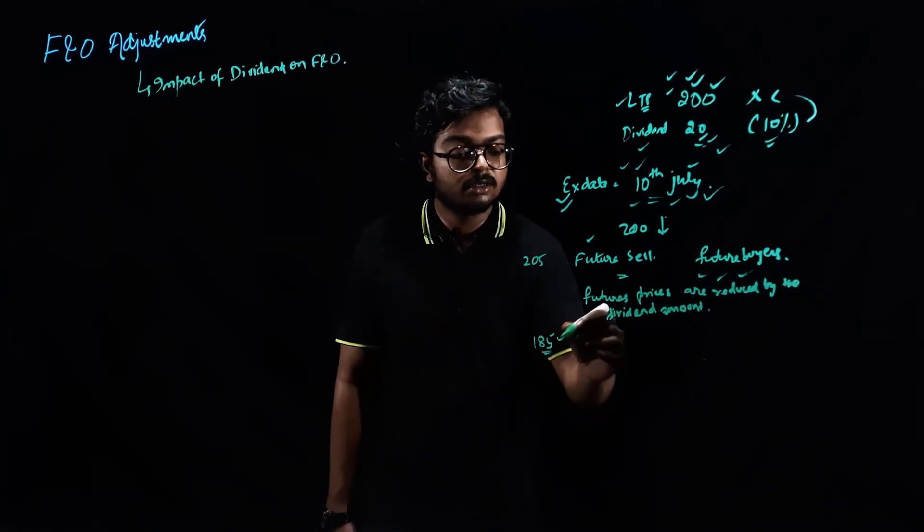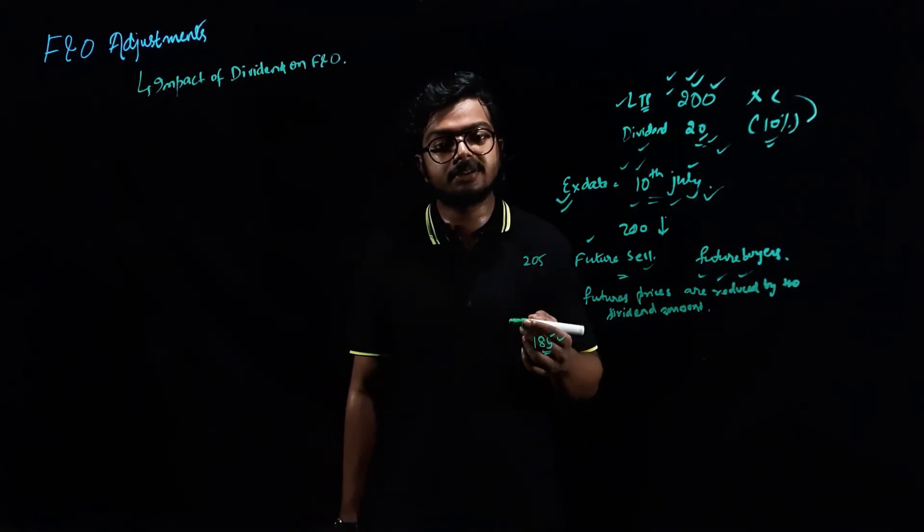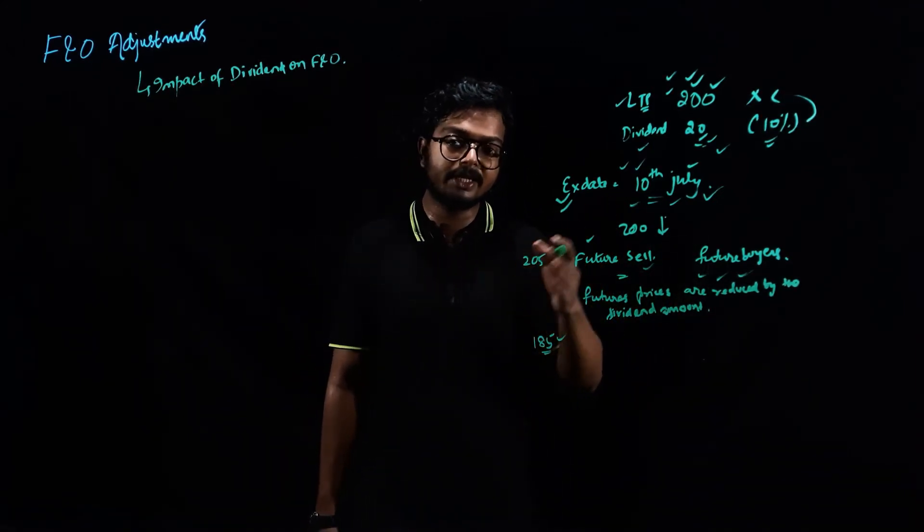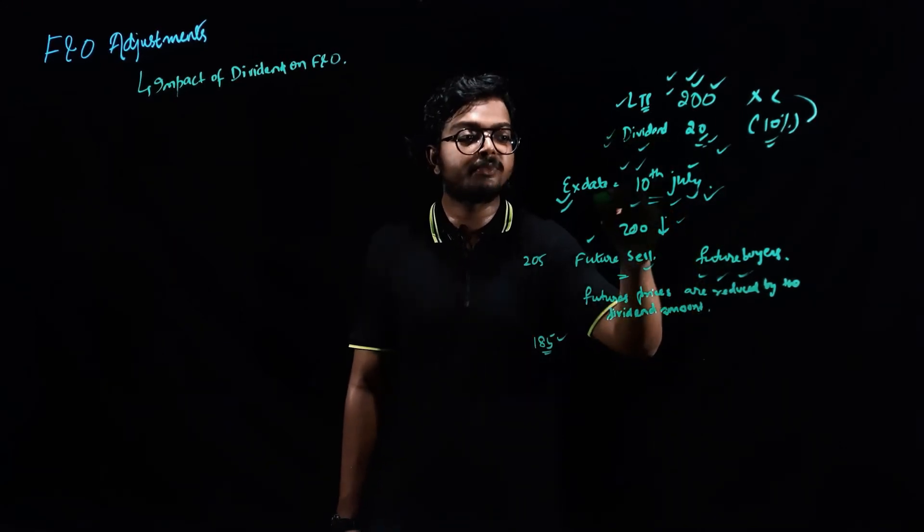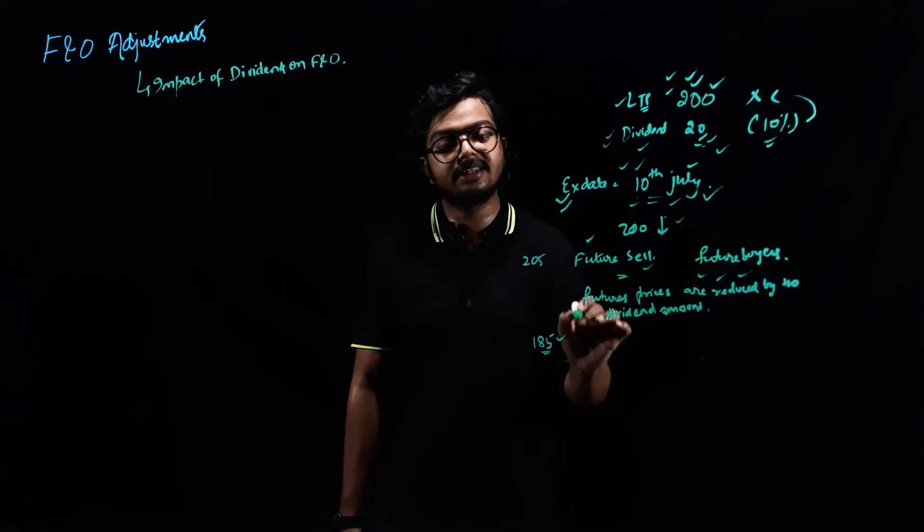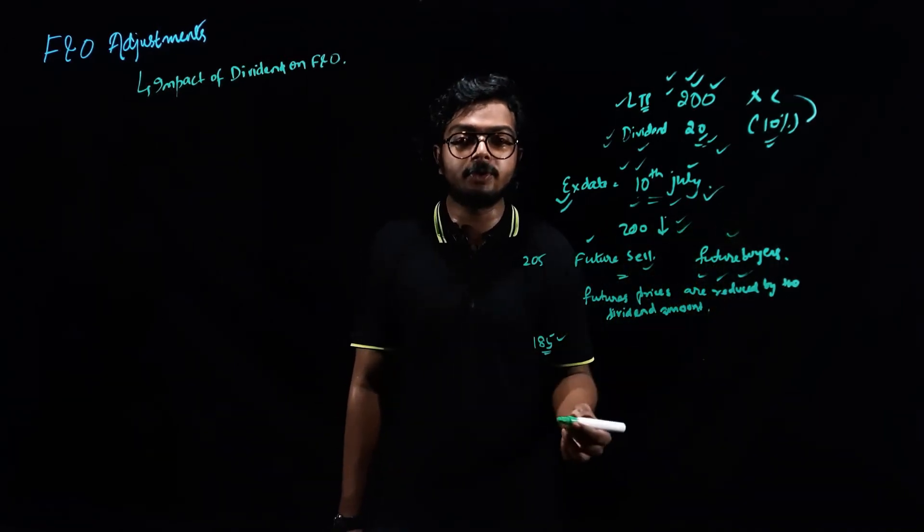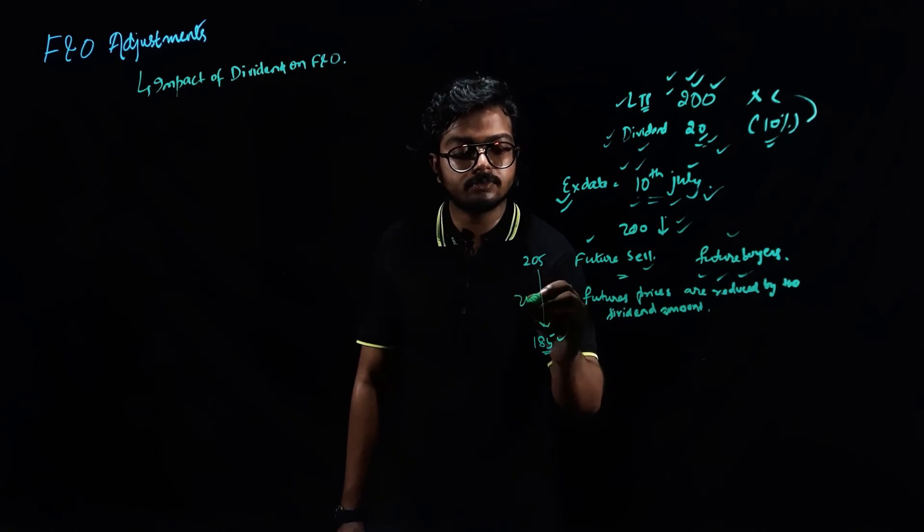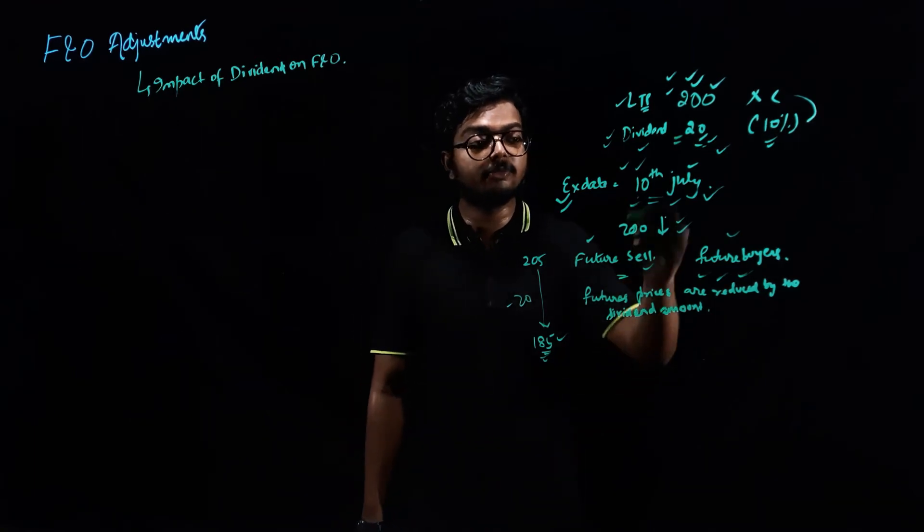Just because if they don't do that, then the future sellers would be at advantage. And as per the exchange, the exchange wants that everyone, the buyer and seller, should have equal opportunity. But as a result of this dividend's impact on this extent, many sellers would be coming. They would be selling off their shares. So the price is definitely going to go down. So to ignore this loss for the future buyers, what the exchange does is it reduces by this dividend amount. So now the futures price would be at 185 on 10th of July.